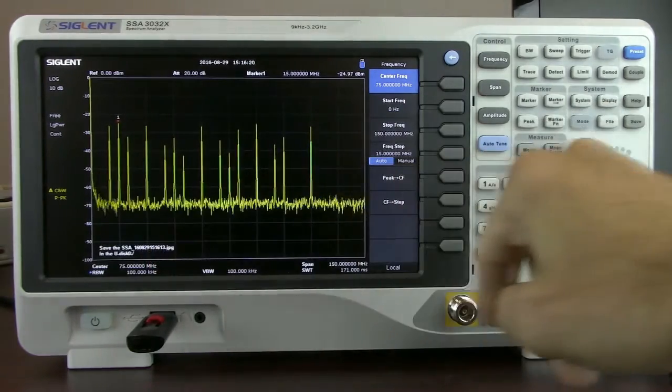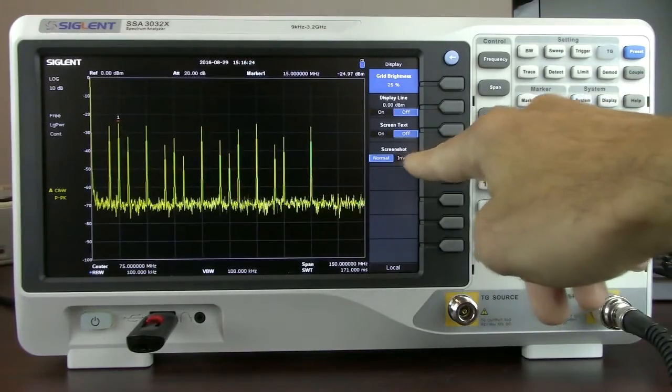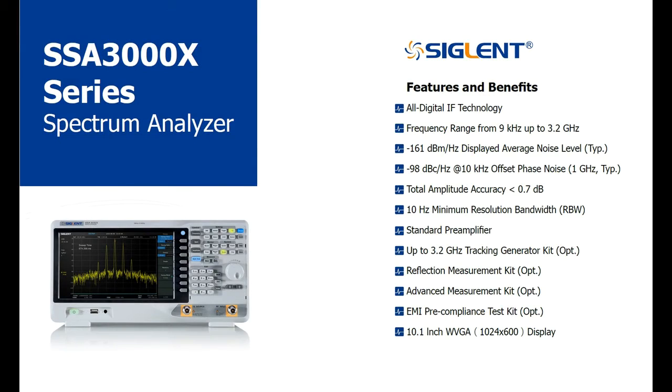We can also go back to display and change that to an inverted image. That's going to save you on ink when you go to print. The next option I'd like to introduce is the EMI Toolkit for the SSA 3000X.